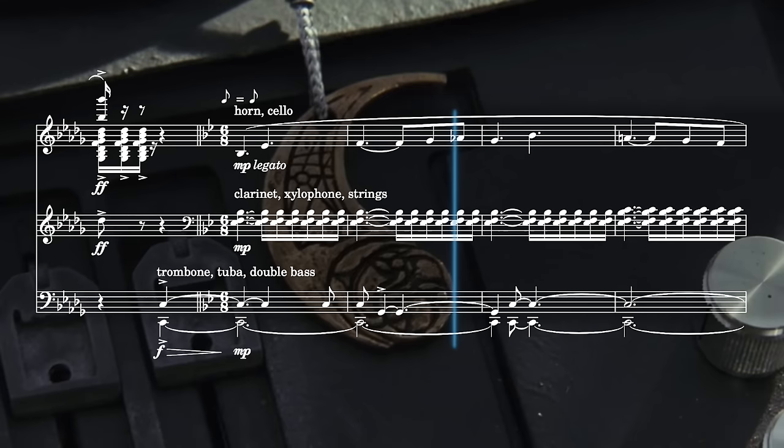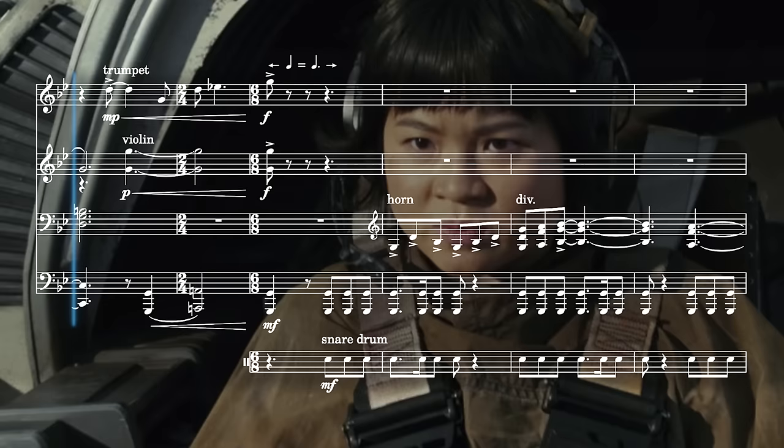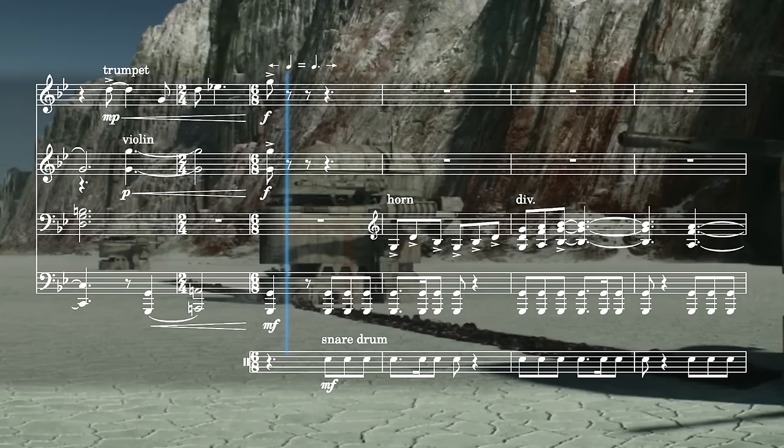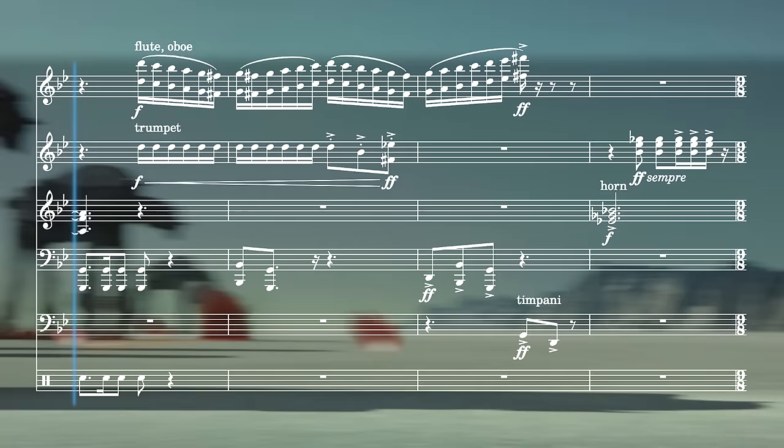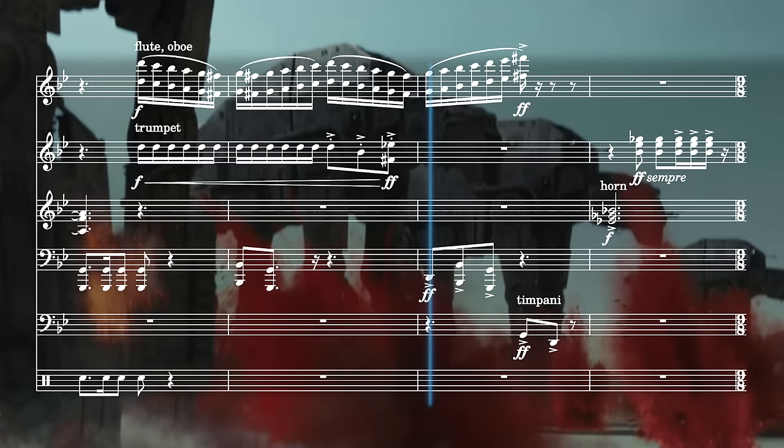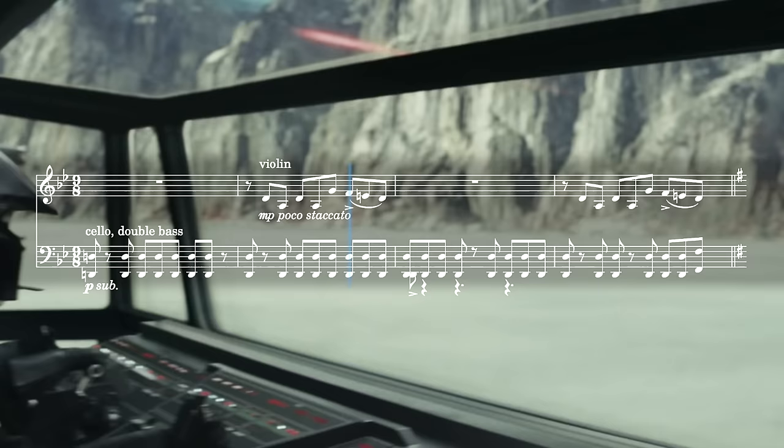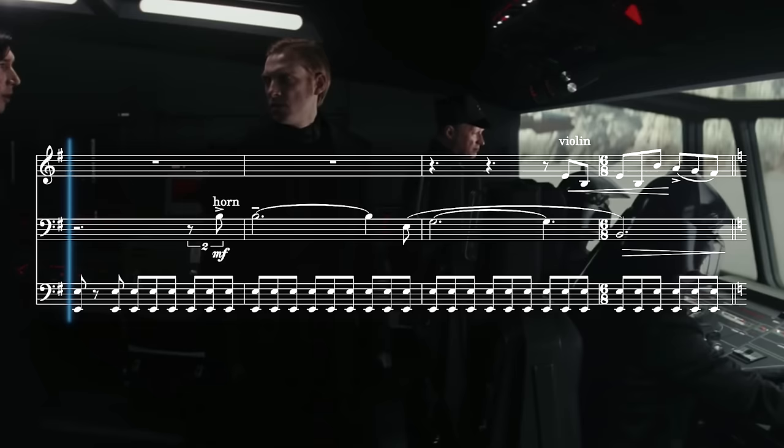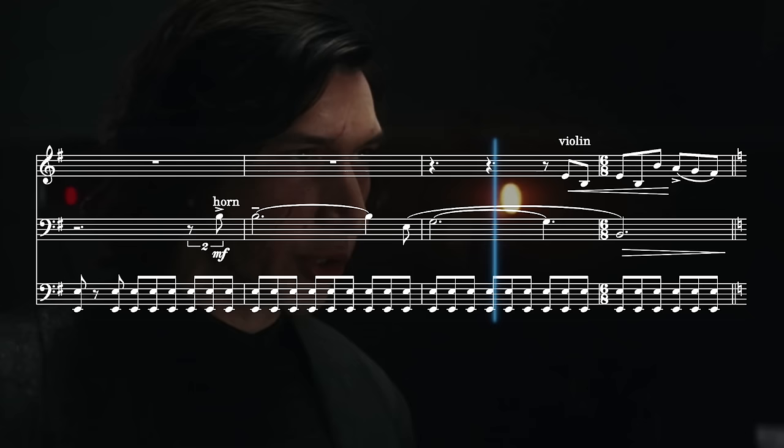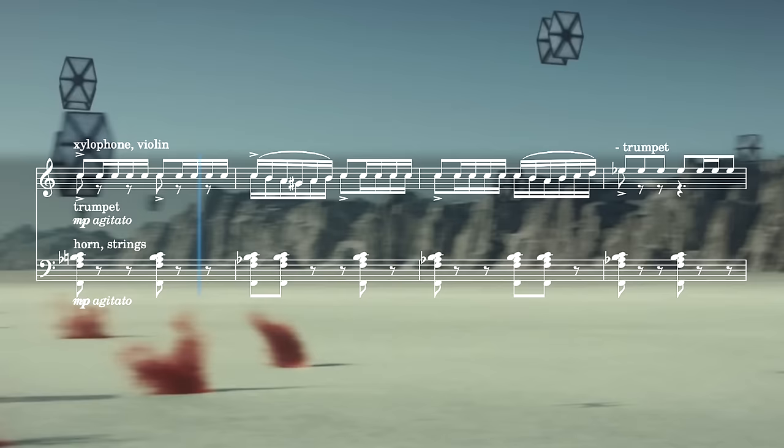We then get our first metric modulation, from simple to compound time, giving us driving six eight and nine eight metres. This allows multiple themes to be played successively within the same basic metre. First, Kylo Ren's theme as he gives his orders. And then a rapid octatonic passage on top of jagged chords in the strings and brass.